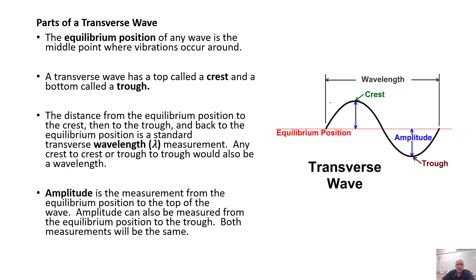Here's the terminology for transverse waves. We have an equilibrium position down the center. The amplitude is from the equilibrium position to either the crest, which is the top of the wave, or the trough, which is the bottom of the wave. A full wavelength — using the symbol lambda — goes from where the wave goes up, down, and back up, completing one full wave.